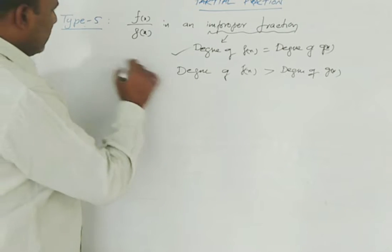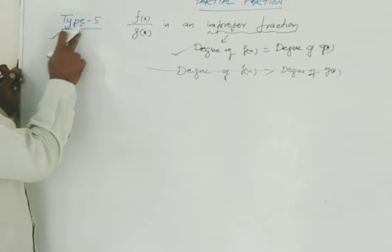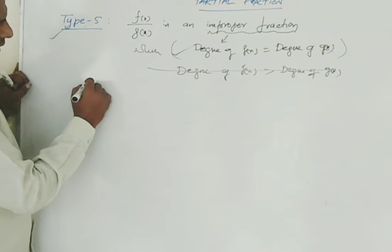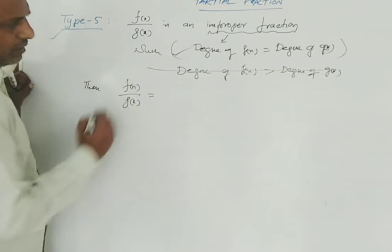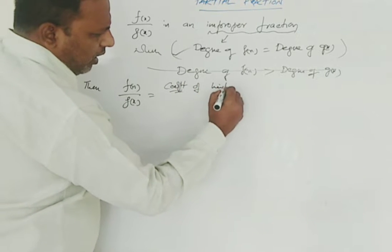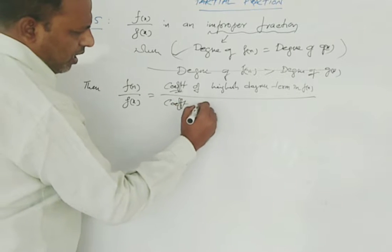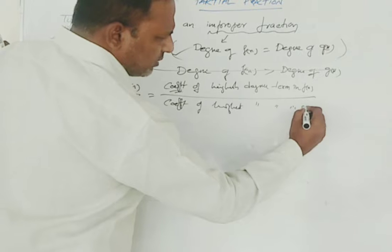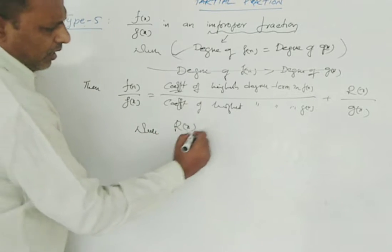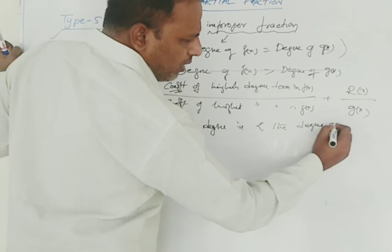We consider degree of f of x equal to degree of g of x for Type 5, and degree of f of x greater than degree of g of x for Type 6. For Type 5, f of x by g of x is an improper fraction where degree of f of x equals degree of g of x. Then f of x by g of x can be written as the coefficient of the highest degree term in f of x divided by the coefficient of the highest degree term in g of x, plus some r of x by g of x, where the degree of r of x is less than the degree of g of x.